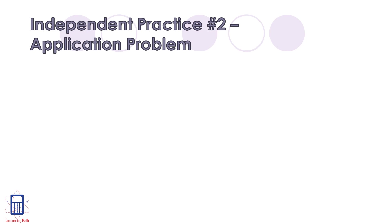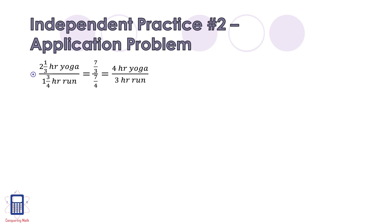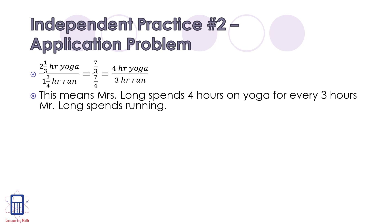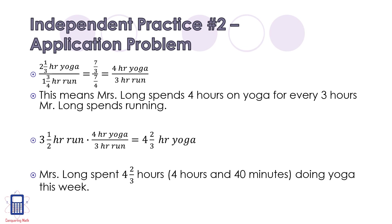Let's see how you did with this one. Remember, we have to divide the ratio of hours of yoga by hours of running. So we have 2 and 1 third hours of yoga divided by 1 and 3 quarters hours of running. These mixed numbers change into the improper fractions 7 over 3 and 7 over 4, which simplifies down to 4 hours of yoga for every 3 hours of running. So Mrs. Long spends 4 hours on yoga for every 3 hours of running. Now we need to know how much time she spent on yoga this week. If Mr. Long spent 3 and 1 half hours running, and we multiply that by the value of the ratio — 4 hours of yoga for every 3 hours of running — we find 4 and 2 thirds hours of yoga. So Mrs. Long spent 4 and 2 thirds hours, or 4 hours and 40 minutes, doing yoga this week.